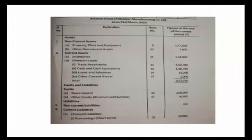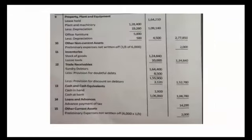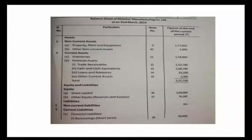Other non-current assets — Note No. 10. This is preliminary expenses. Preliminary expenses not yet written off: 2,000. Other non-current assets — preliminary expenses not written off: 2,000.